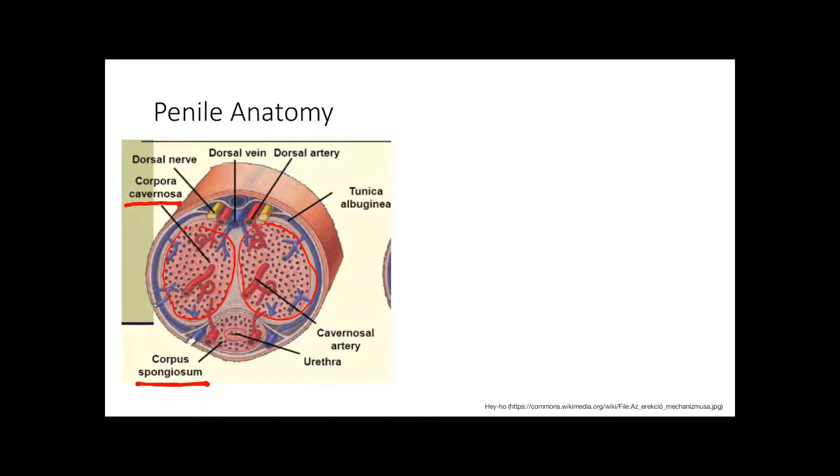Corpus spongiosum also helps out and houses the urethra. Spongiosum is yellow and urethra is yellow, easy peasy. The tunica albuginea is a band of tough fibrous connective tissue that surrounds the corpus cavernosum.